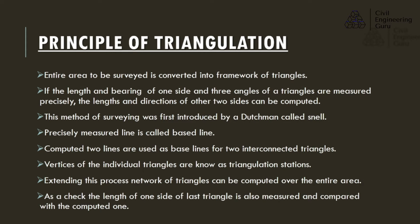Principle of triangulation: the entire area to be surveyed is converted into a framework of triangles. If the length and bearing of one side and three angles of a triangle are measured precisely, the lengths and directions of the other two sides can be computed. This method of surveying was first introduced by a Dutchman called Snell. The precisely measured line is called the baseline; computed two lines are used as baselines for two interconnected triangles. Vertices of the individual triangles are known as triangulation stations.